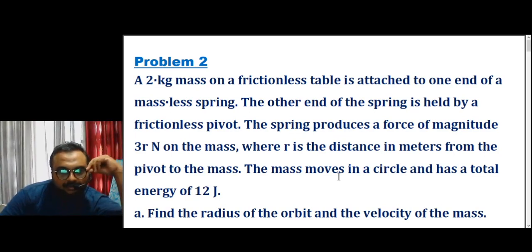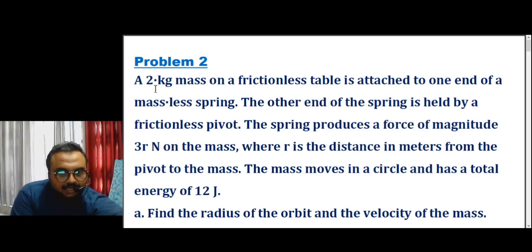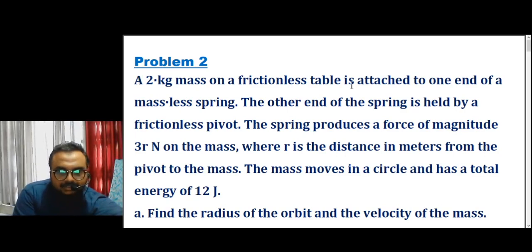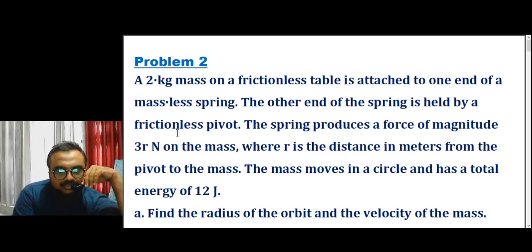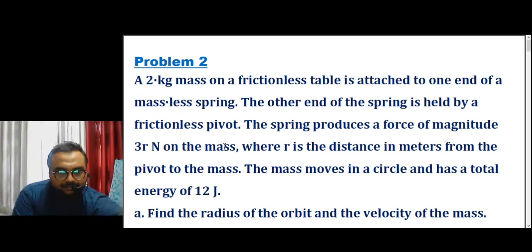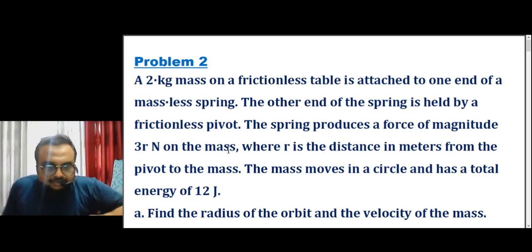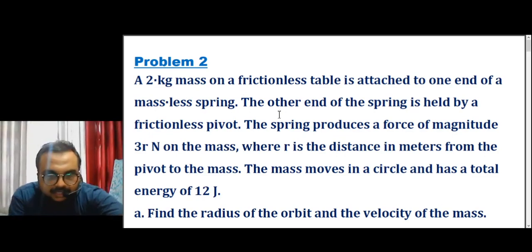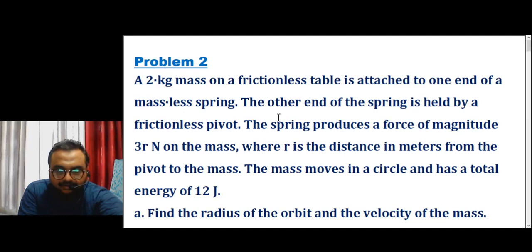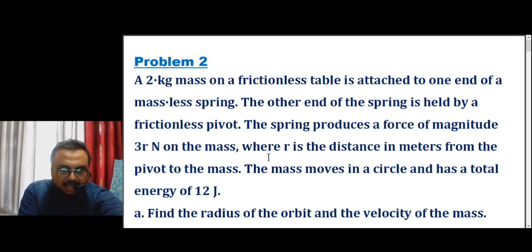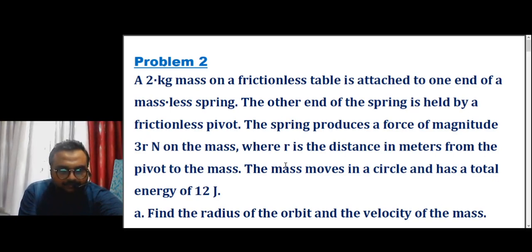Let me read the problem once. A two kilogram mass on a frictionless table is attached to one end of a massless spring. The other end of the spring is held by a frictionless pivot. The spring produces a force of magnitude 3r newtons on the mass, where r is the distance in meters from the pivot to the mass. The mass moves in a circle and has a total energy of 12 joules.